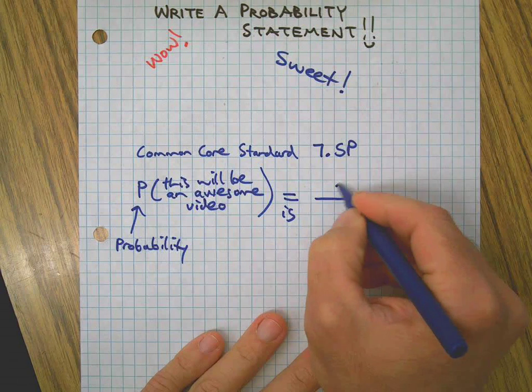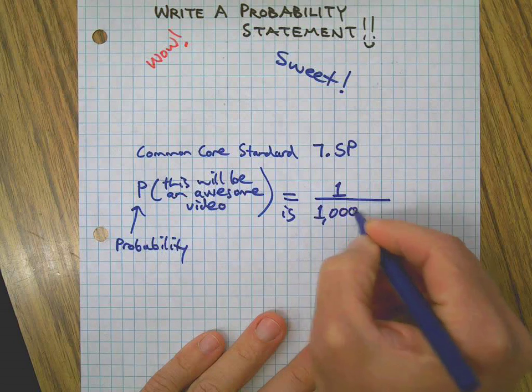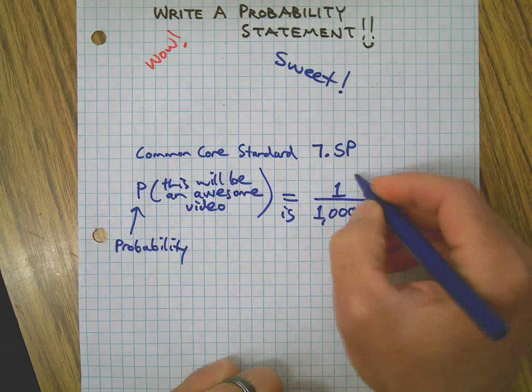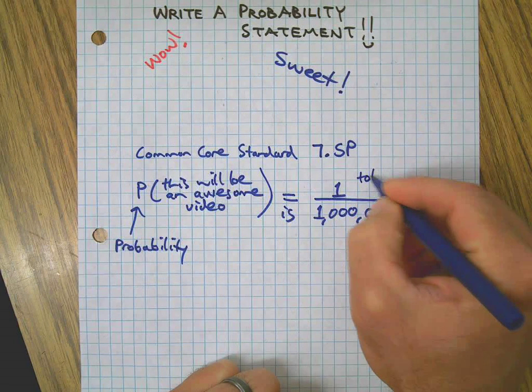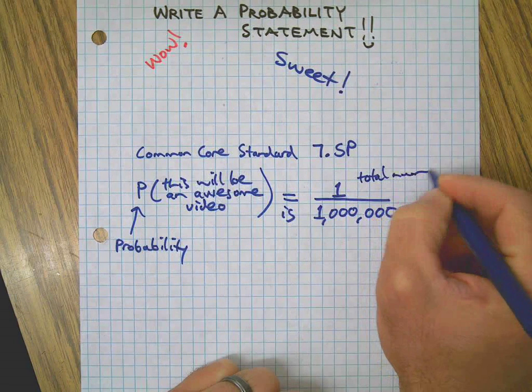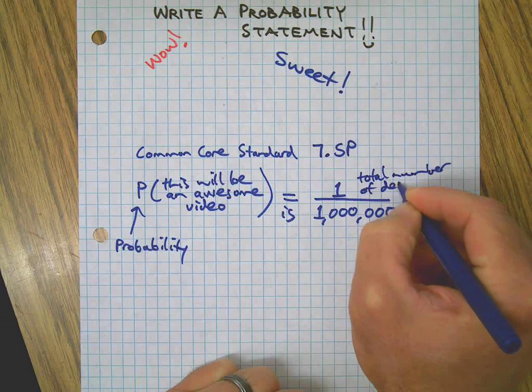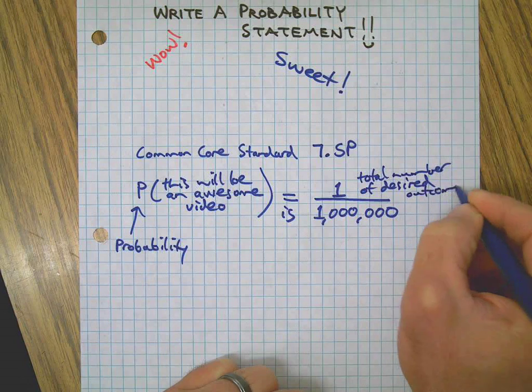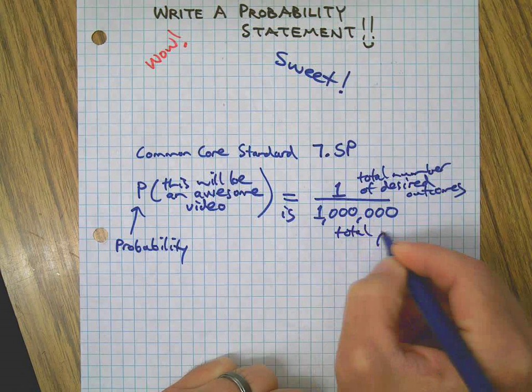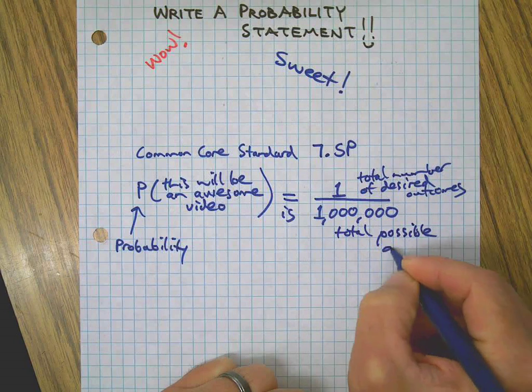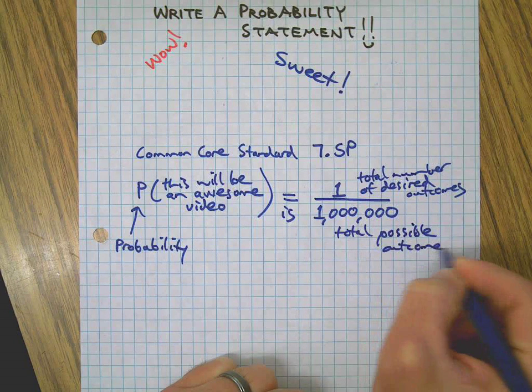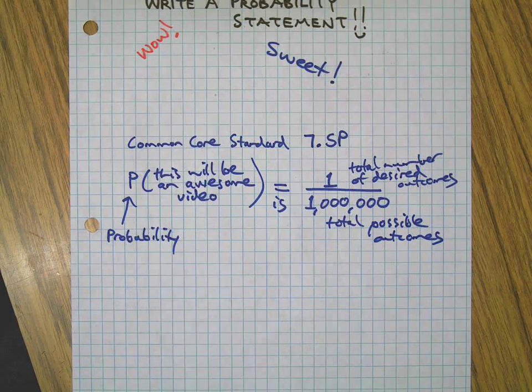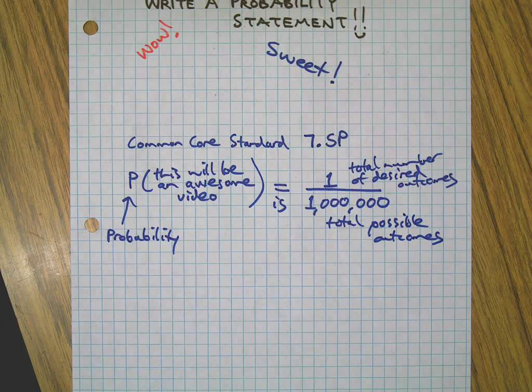That's the equal sign. Then we're going to create a fraction and we have on top total number of desired outcomes. Don't worry, we'll get to the vocab here in a second, over total possible outcomes. Now even though this is just a silly example, we know this will be an awesome video, but this gets across everything you need to know to write a real probability statement.